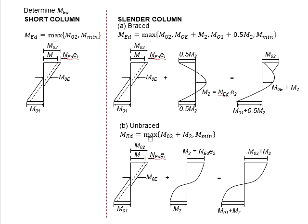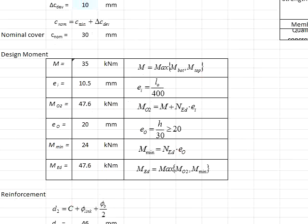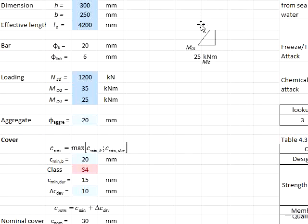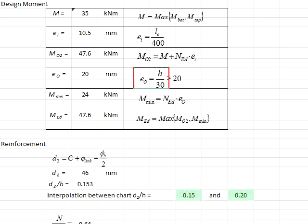Next, determine M-min. M-min is given by the axial force times e_0, where e_0 equals h divided by 30 and e_0 needs to be greater than 20 mm. The h here refers to the column height in the direction of the bending moment, which is 300 mm. Substituting the value into the formula, e_0 needs to be at least 20 mm, so e_0 equals 20 mm. By multiplying e_0 with N_ED, you get M-min.